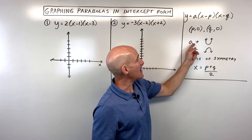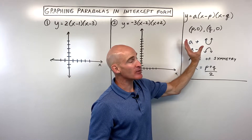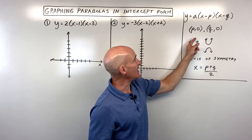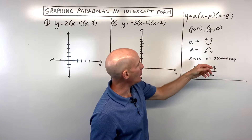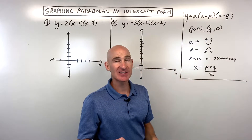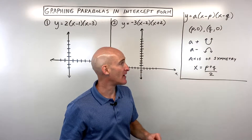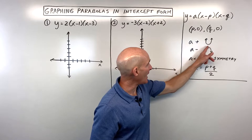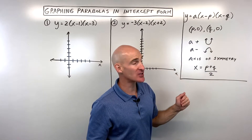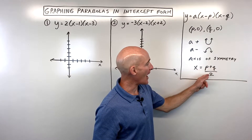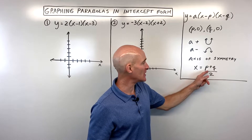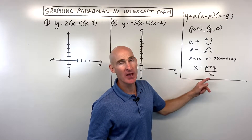If a is positive, the parabola opens up. If a is negative, it opens down. To find the axis of symmetry — the line that divides the parabola in half, so if you fold over that line it matches itself — you average the two x-intercepts: add them up and divide by two.